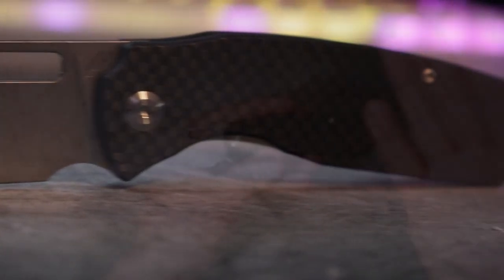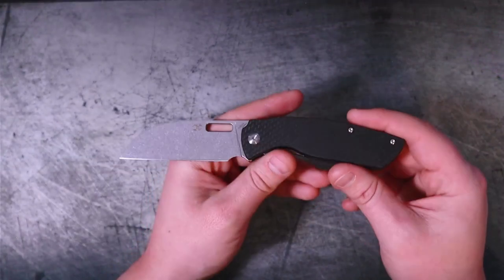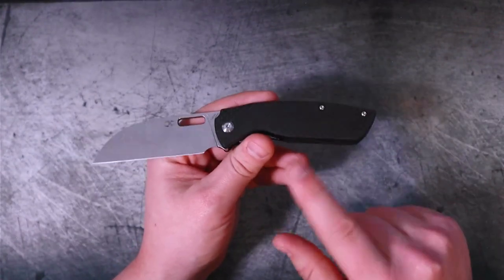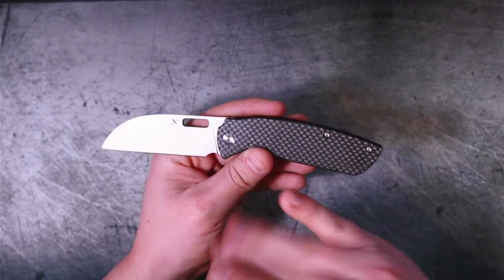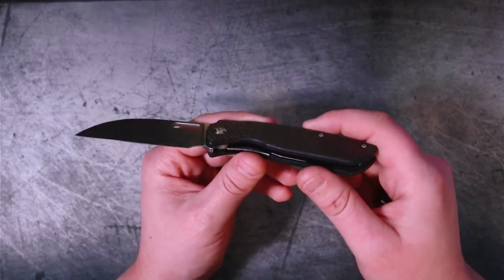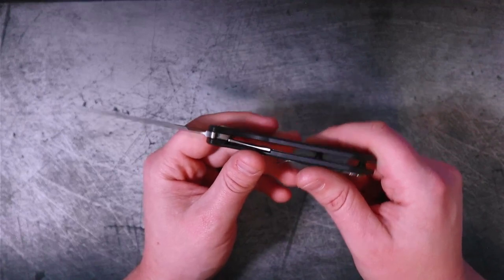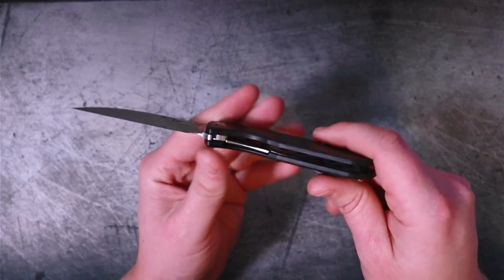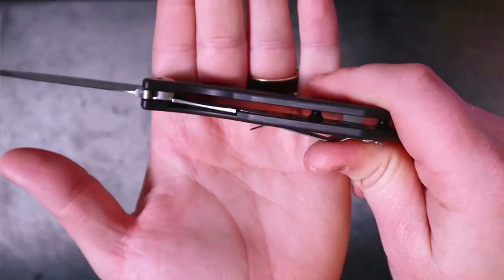Sheepdog knives, I'll be honest, I don't know anything about sheepdog knives. If you do, let me know in the comment section down below what other sheepdog knives should I check out. We're going to start talking about the materials because why not. As I already mentioned, peel ply carbon fiber, that means that there is a thin layer of carbon fiber adhered to a thicker layer of G10.